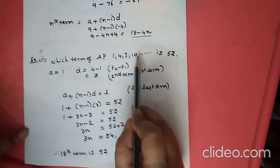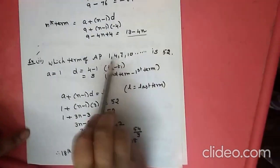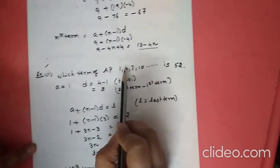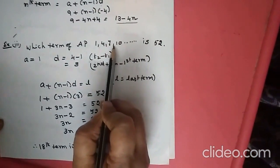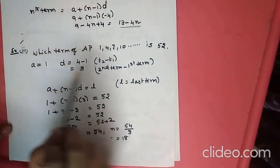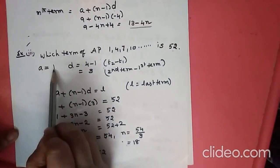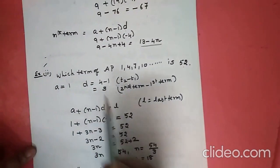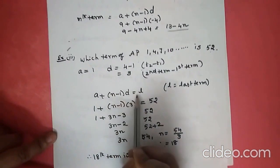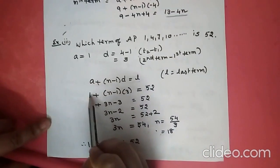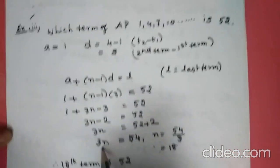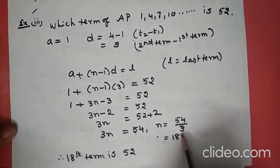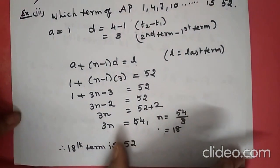Which term of the AP 1, 4, 7, 10, etc. is 52? First verify it is AP: 4-1=3, 7-4=3, 10-7=3 — yes, common difference is same. A=1, D=3. Apply A + (N-1) × D = 52: 1 + (N-1) × 3 = 52. Solving, N = 54 ÷ 3 + 1 = 18. Therefore the 18th term is 52.